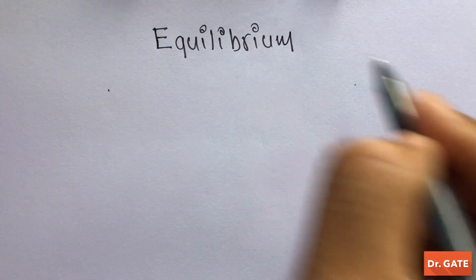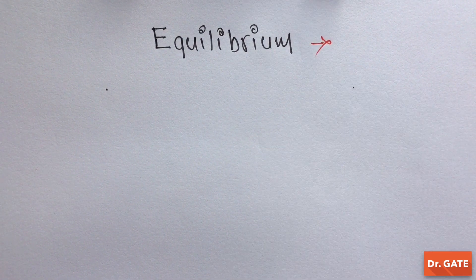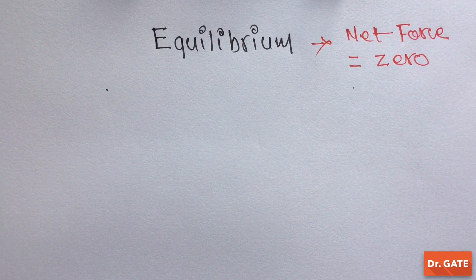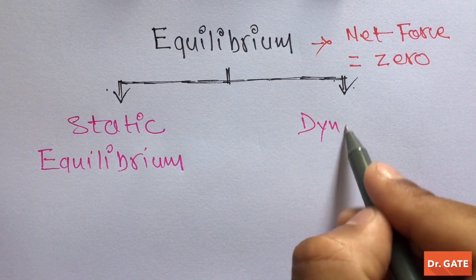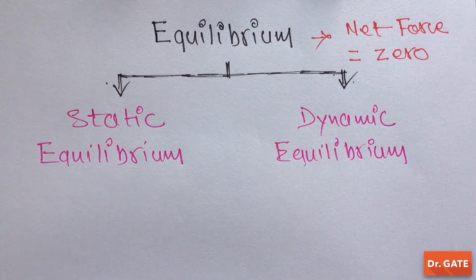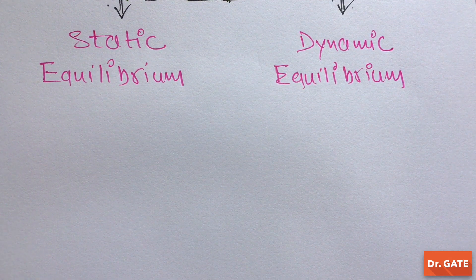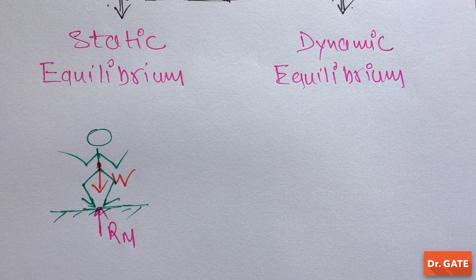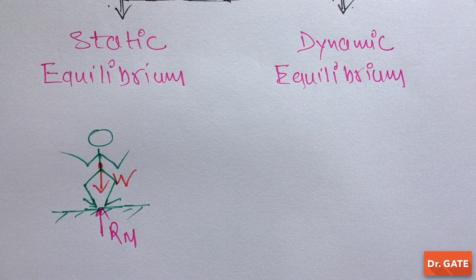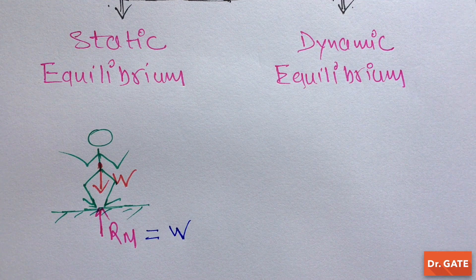Now come to equilibrium. Equilibrium simply means that the net force is zero. There are two types of equilibrium: static equilibrium and dynamic equilibrium. Suppose you are standing on a ground. Then your weight will act in the downward direction, and the ground will apply some normal reactions in the upward direction. If the magnitude of this normal reaction is equal to the weight of your body, then you will be at equilibrium. Since you are at a static position, your state of equilibrium is known as static equilibrium.